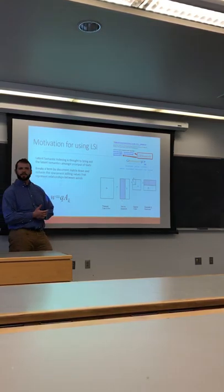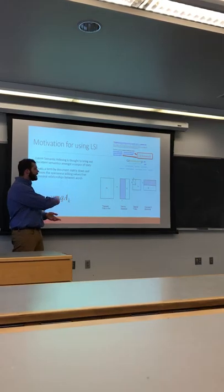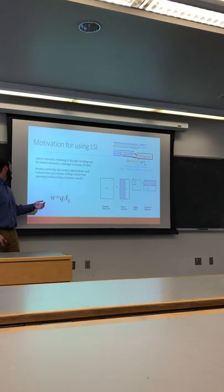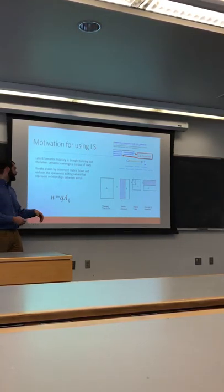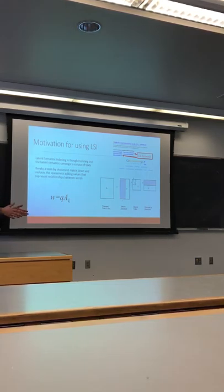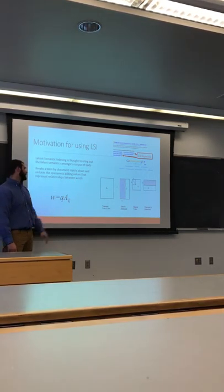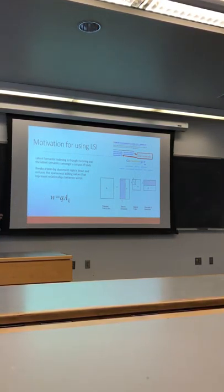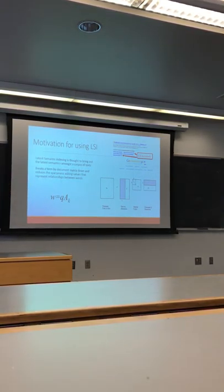We optimized the truncation value — it was around 300. Then you multiply the truncated matrices back together. When you multiply in your query vector — say you make a post that you're trying to check if it's cyberbullying or not, that would be your query vector — you multiply it by the truncated term by document matrix and you get a weighted vector again, where every document has a weight for how high the cyberbullying content is.